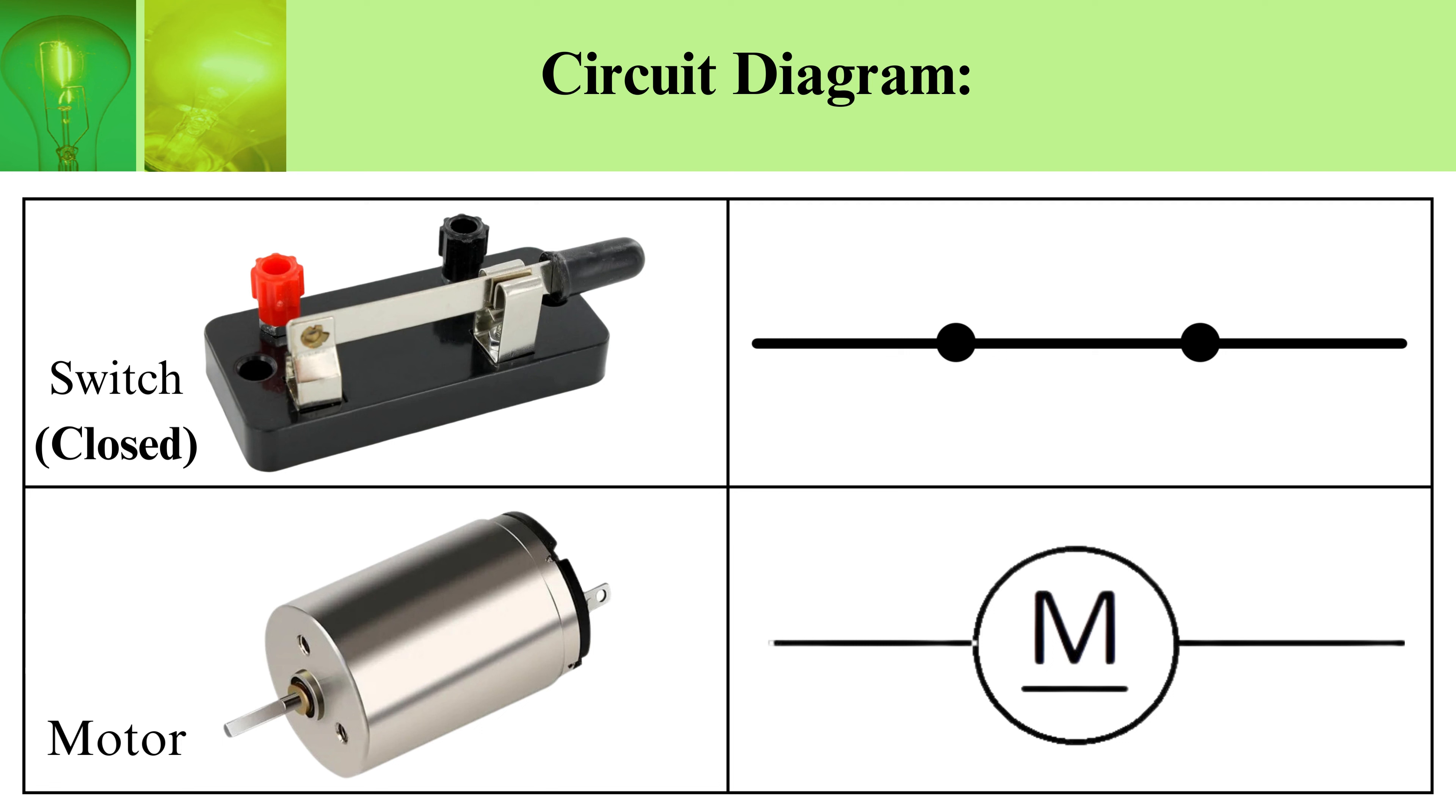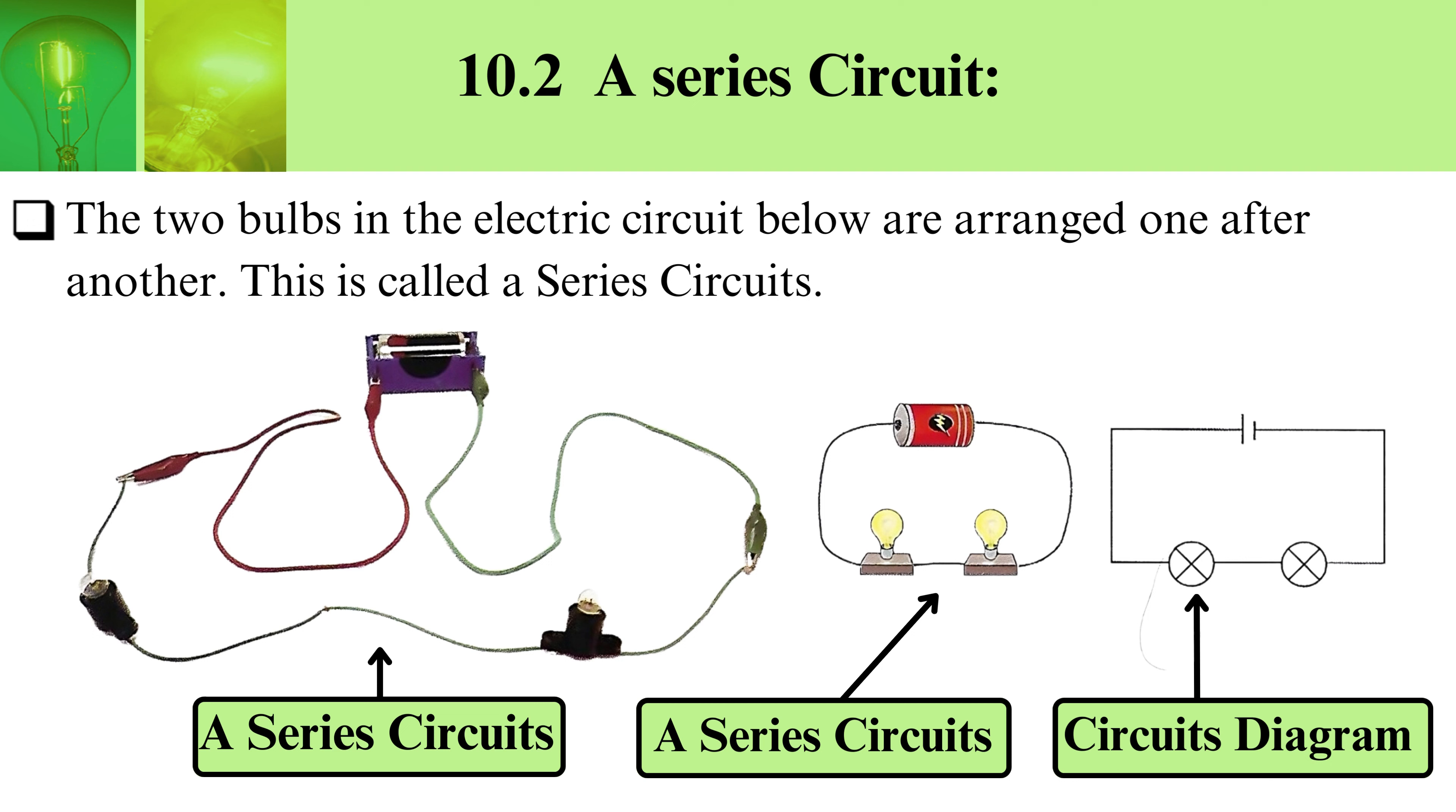A series circuit: The two bulbs in the electric circuit below are arranged one after another. This is called a series circuit. A very clear picture showing three different diagrams: a series circuit, a series circuit, and a circuit diagram.